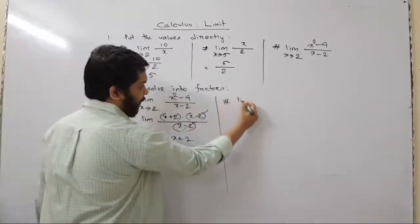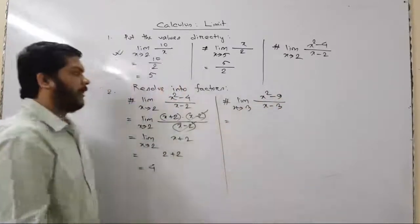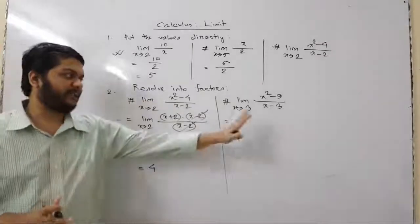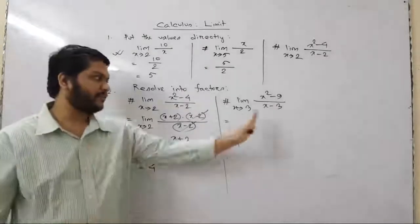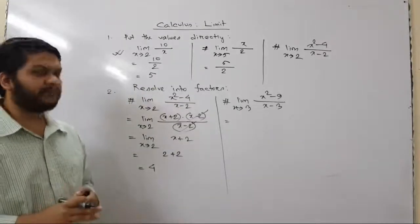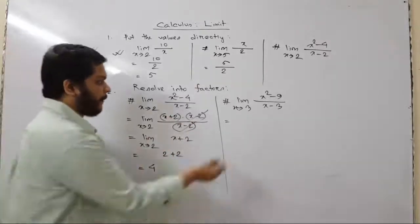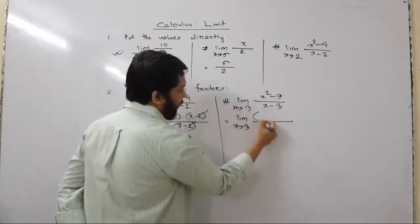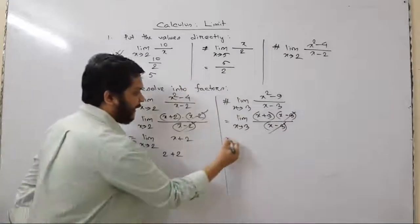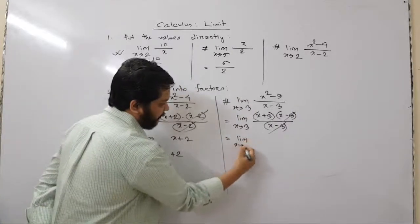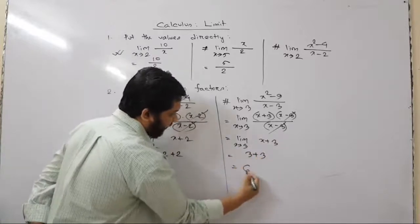Pause the video and try to solve it yourself before watching the solution. The solution: limit as x tends to 3 of (x + 3)(x - 3) divided by (x - 3). The (x - 3) terms cancel, giving limit as x tends to 3 of (x + 3). Substituting x equals 3: 3 + 3 equals 6. Very easy!